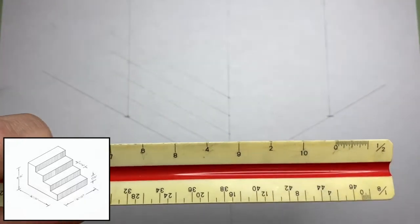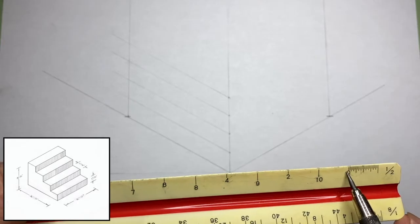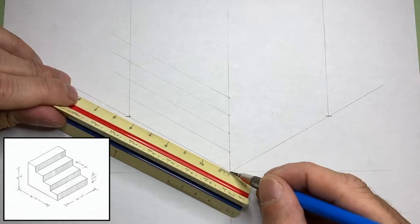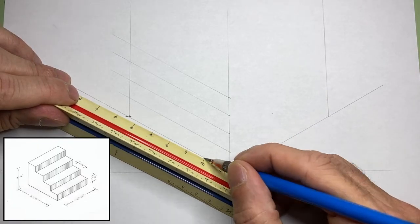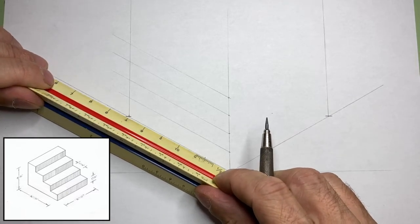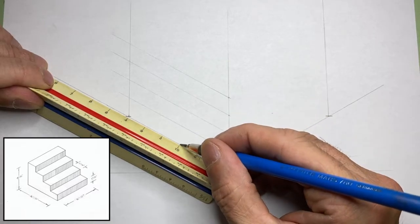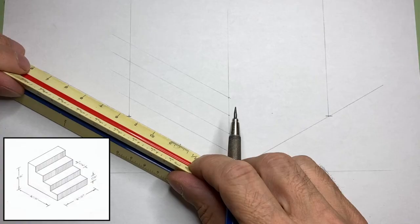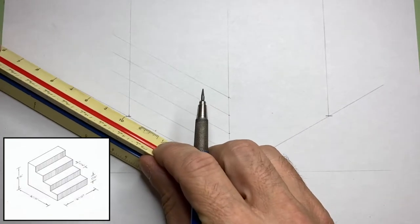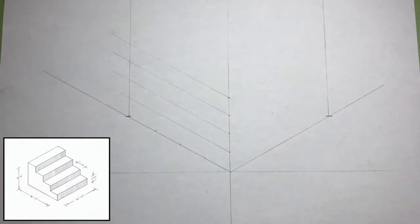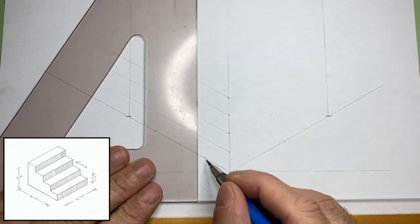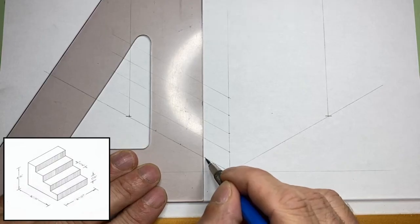Now we'll take the t-square and triangle and draw a vertical line. Now we'll determine the depth of each step, or the tread. For this exercise, we'll do four steps. Each step is one foot six. I'll measure one foot six, slide the scale ruler over, mark another one foot six, slide it over again, and mark one foot six. Now, wherever those dashes are, we'll take the t-square, the triangle, and we'll add some vertical lines to map out each step.